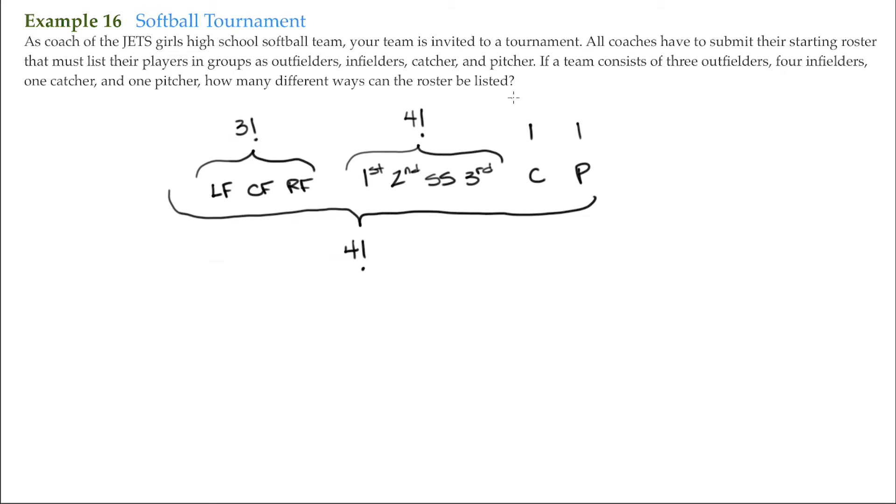So how many different ways can the roster be listed? Well, that'll be four factorial times three factorial times four factorial